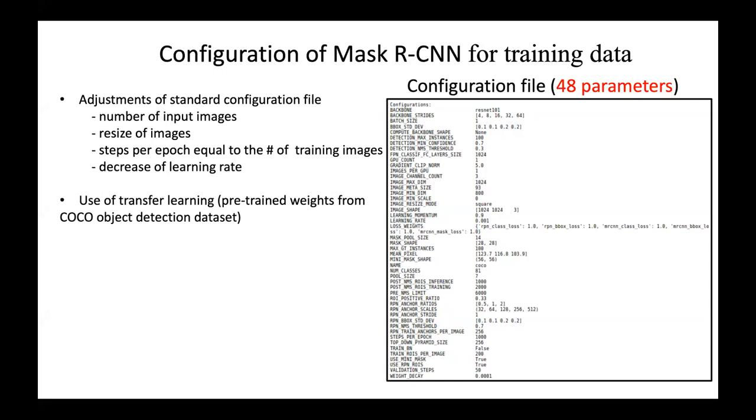We also use a nifty technique called transfer learning, which is really neat, especially with deep learning applications where we can use a network that has been pre-trained on thousands of images. In this case, we use one from Microsoft called Coco, which is an object detection data set. We grab those pre-trained weights and then we can adjust the last few layers of the deep learning network to figure out where our sand dollars will be.